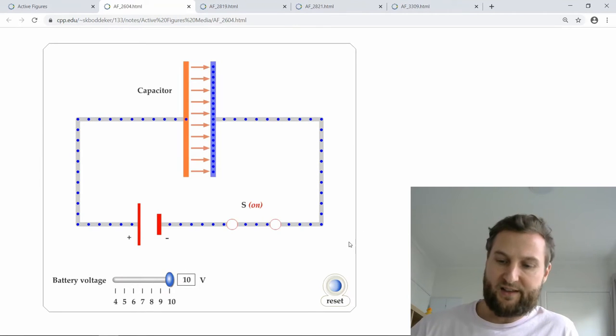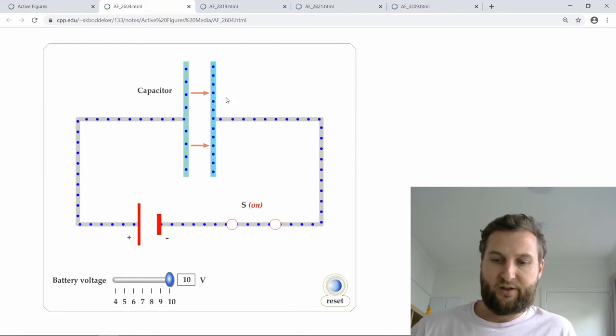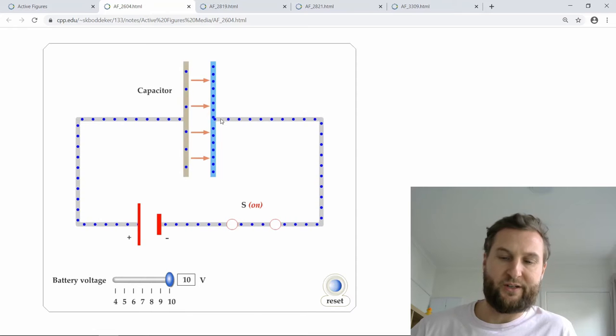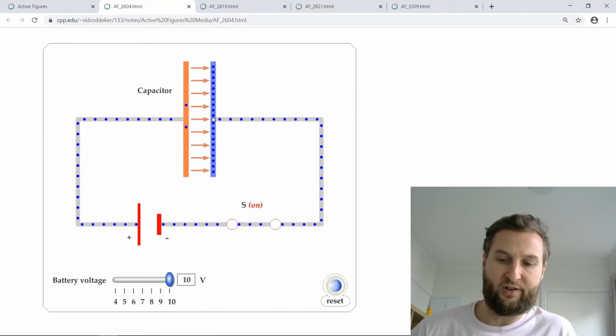Let's go back to this active figure. I will reset it, and when we close the switch it takes some time for these electrons to accumulate here and produce the negative charge on this plate.